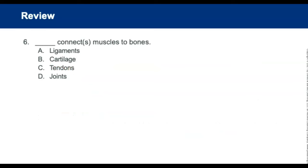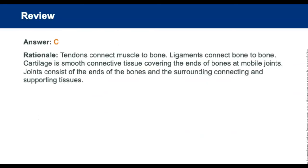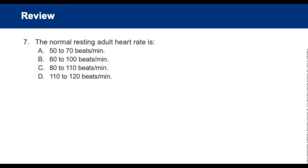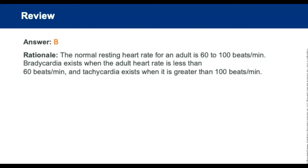What connects muscle to bone? Tendons connect muscle to bone; ligaments connect bone to bone. The normal resting heart rate in an adult is 60 to 100 beats per minute. Below 60 is bradycardia; above 100 is tachycardia.